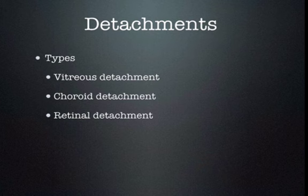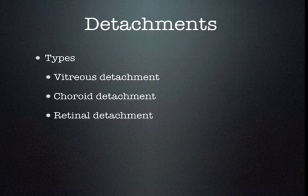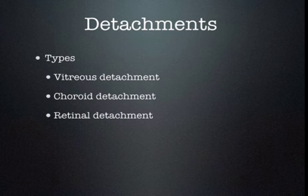There are several types of detachments: vitreous detachment, choroidal detachment, and retinal detachment. The two hardest to distinguish from one another are retinal detachment and vitreous detachment, and a vitreous detachment may be associated with a retinal detachment. The one that needs emergent treatment is a retinal detachment. So making sure you know which one it is, is not only important, it's also difficult at times. Therefore, you should always use conservative management when using ultrasound to make this diagnosis.